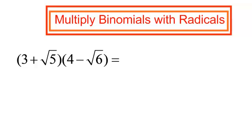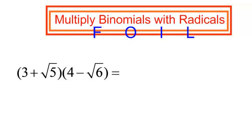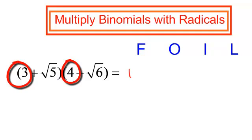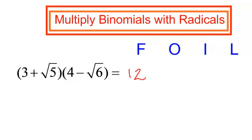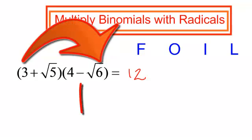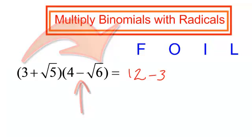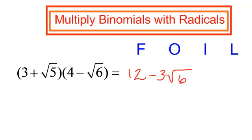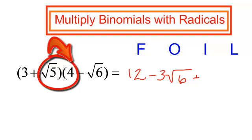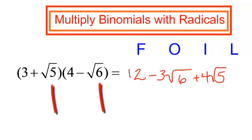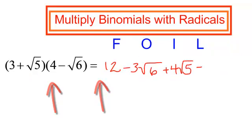When you multiply a binomial times a binomial, you still are going to use FOIL. The first term: 3 times 4 is 12. The outer terms — way out here — 3 times negative radical 6 is negative 3 radical 6. Inner terms: 4 times radical 5 is positive 4 radical 5. And the last term: radical 5 times negative radical 6 is negative radical 30.